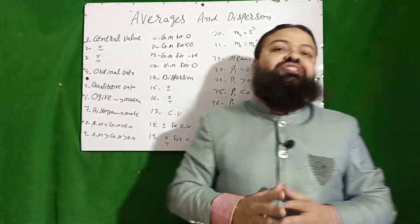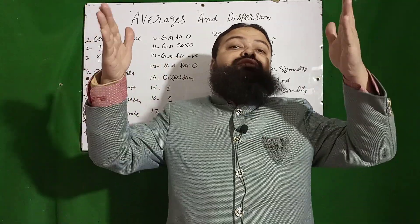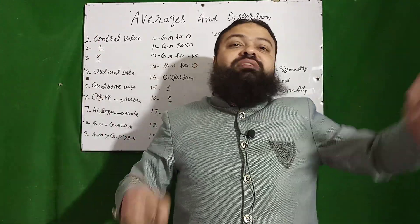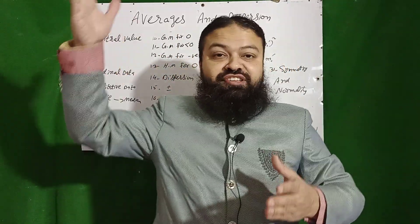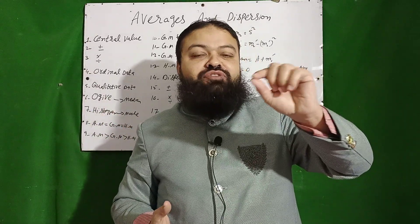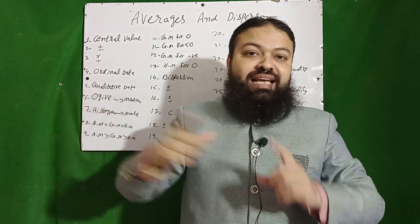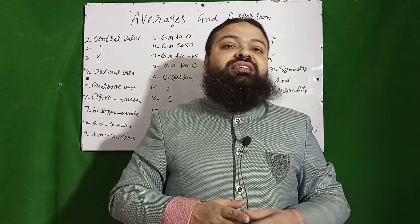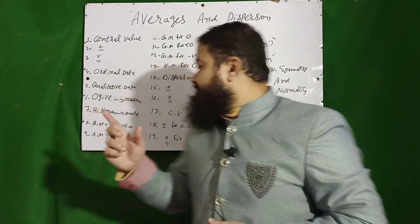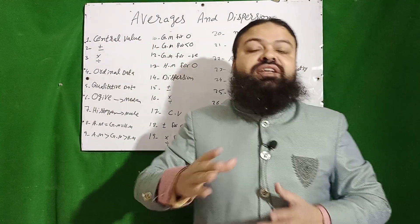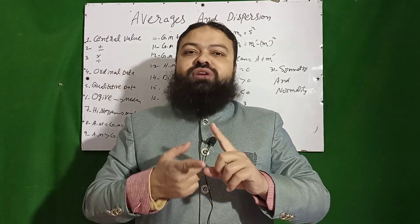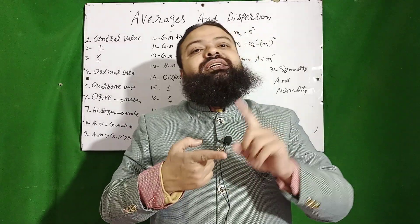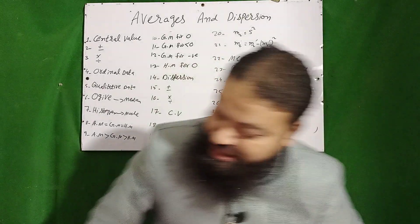A very important concept: the coefficient of variation, which is used to compare two different data sets of two different units — for example, one data set in rupees and another in kilograms. To compare which distribution has more variation, the coefficient of variation is used. The data set with less coefficient of variation has less variation. Importantly, if you add a constant value to all values, the coefficient of variation is changed; but if you multiply or divide, the coefficient of variation is unchanged.